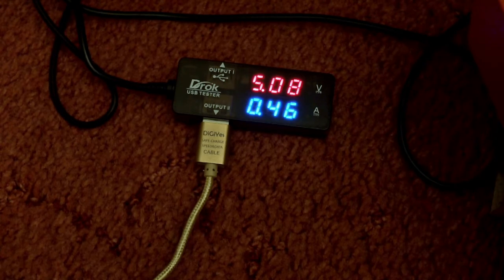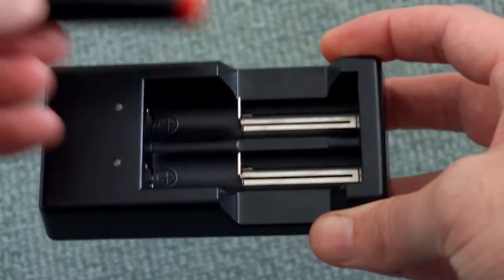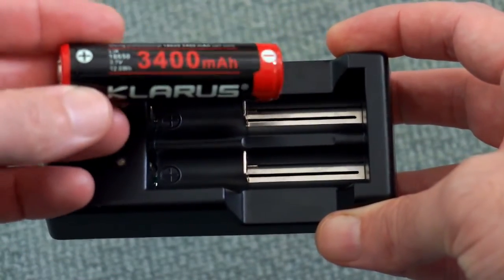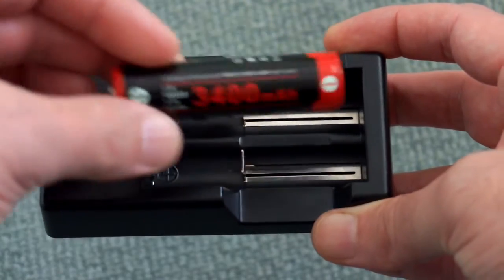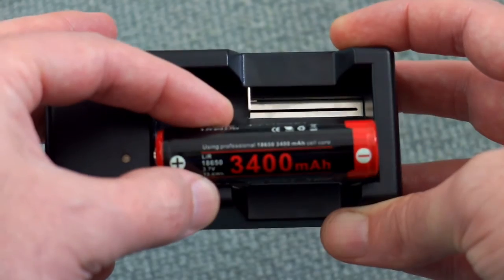I also found that the charging was undercharging the batteries significantly up to about 40-50%. This is a protected 18650 cell. One of the good quality ones from Klarus. 3,400 milliamps an hour and it doesn't fit.